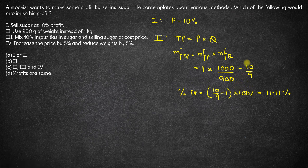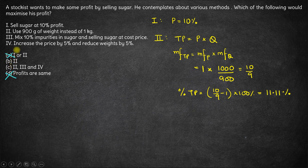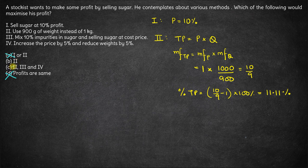So, option 2 gives better profit than option 1. Obviously option A cannot be the answer and option D cannot be the answer. Option 2 is much better than option 1, so option 1 is definitely not the answer, and profits are definitely not the same, so option D is also ruled out. We are now left with option B, which says option 2, and option C, which says options 2, 3, and 4. Let's see whether all of them give the same profit or different amounts.